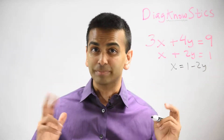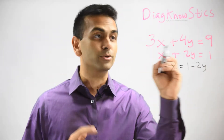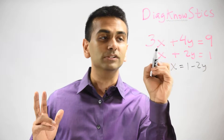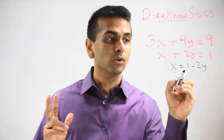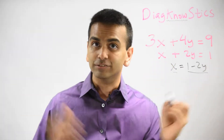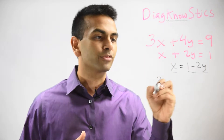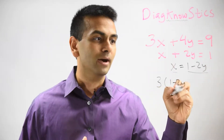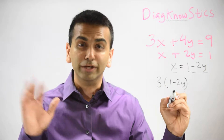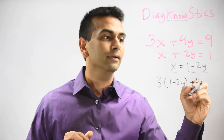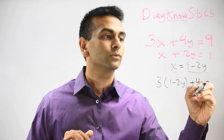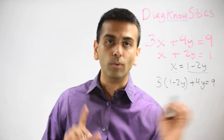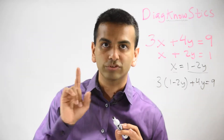Now we substitute. In the equation 3x plus 4y equals 9, we're going to replace x with what x is: 1 minus 2y. So it becomes 3 times (1 minus 2y) plus 4y equals 9. The beauty of this is we now have just one equation with just one variable.